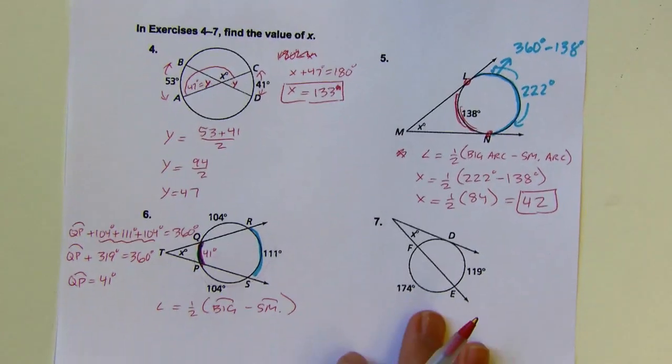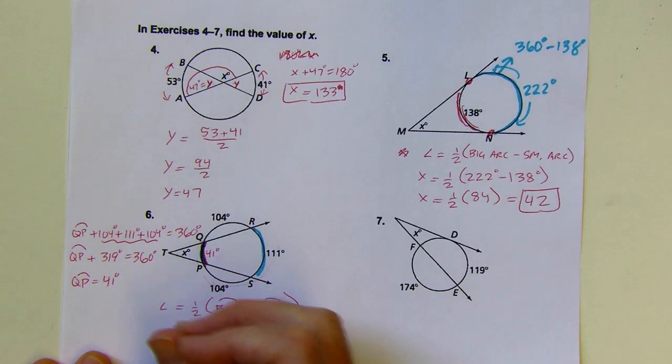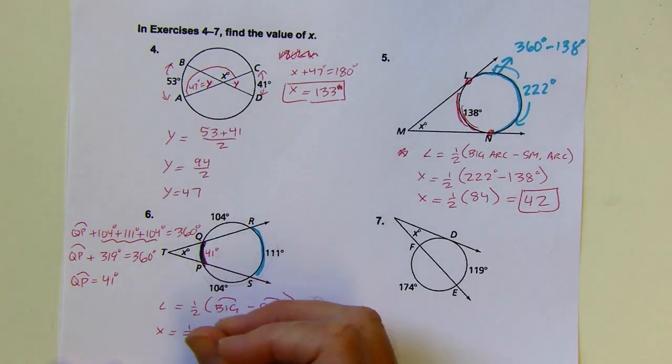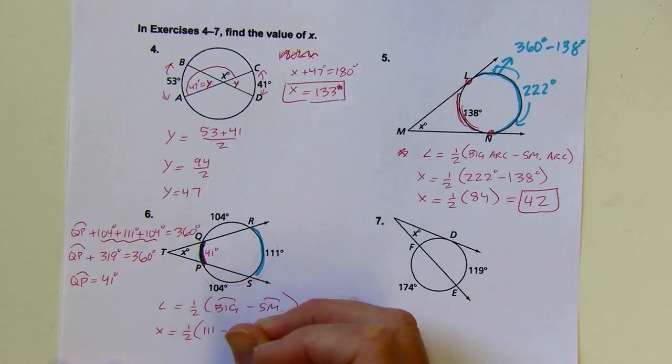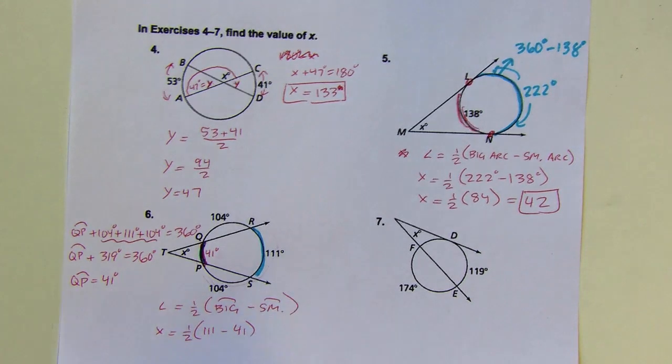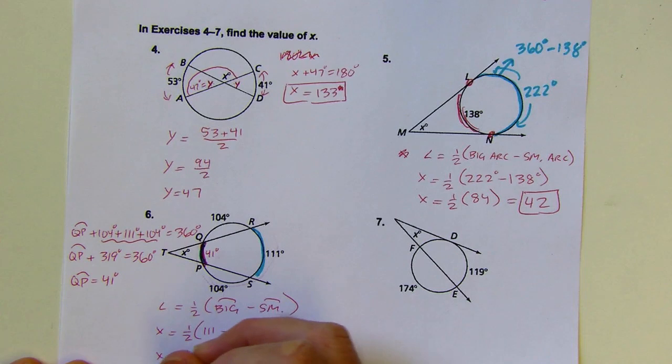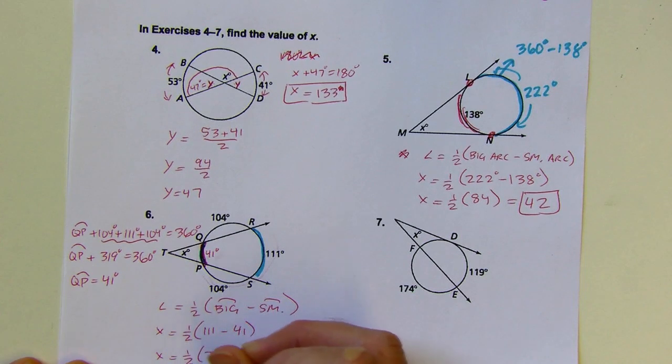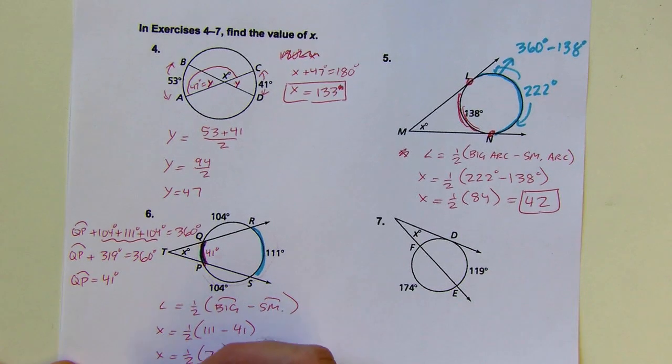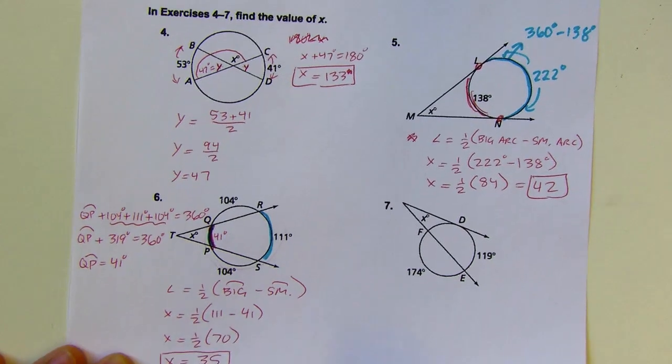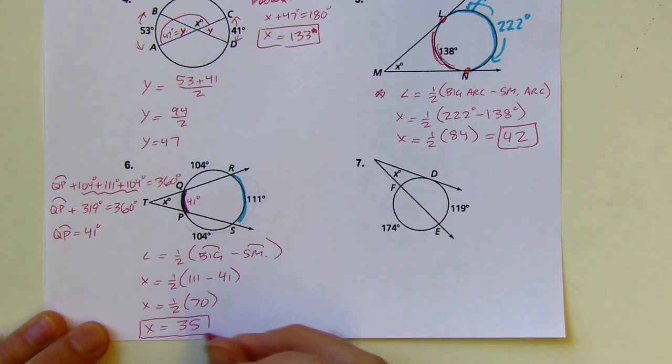Now I have everything I need for the formula. My angle, which is X, is going to equal half of the big arc, which is 111, minus the small arc, which is 41. I'll do that subtraction first. I've got half of 70, which is 35.